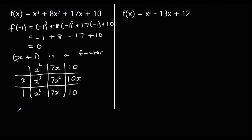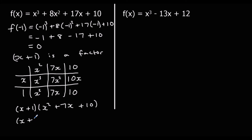So I've got (x+1)(x²+7x+10). It's factorized but not fully yet, so I put the second bracket into two more brackets. What multiplies to make 10 and adds to make 7? Five and two. So fully factorized: (x+1)(x+5)(x+2).